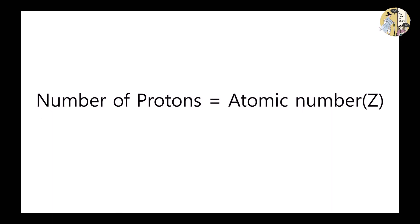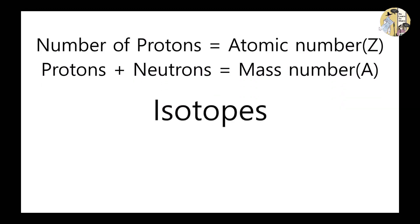The mass number of an atom, given the symbol A, is found by adding up the number of protons and neutrons in the nucleus. Although the number of protons are always equal in the same type of atom, atoms from the same element can differ in mass, since the number of neutrons can vary. These atoms that have the same atomic numbers but have different mass numbers are called isotopes.